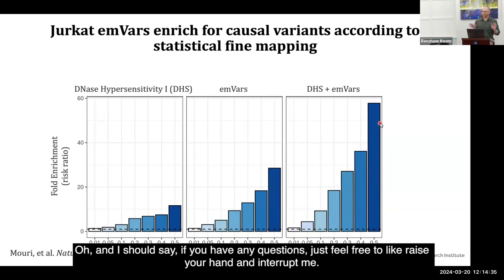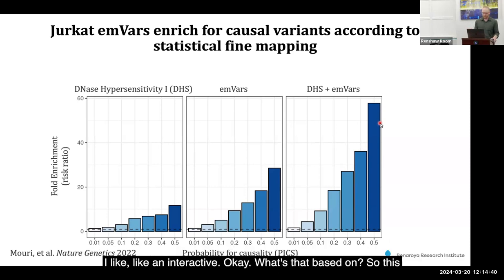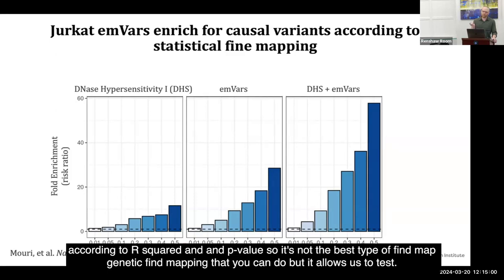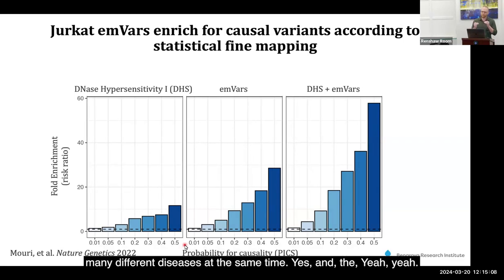Feel free to raise your hand and interrupt me — I like interactive discussions. [Question about probability of disease causation.] So this is an analysis called PICS that assigns probability according to R-squared and p-value. It's not the best type of genetic fine mapping you can do, but it allows us to test many different diseases at the same time.